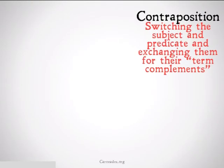Contraposition is defined as switching the subject and predicate and exchanging them for their term complements. A term complement is just the opposite of whatever that term is. The term complement of horse is non-horse, the term complement of blue is non-blue, and the term complement of S is just non-S.